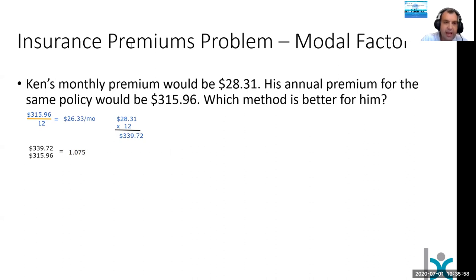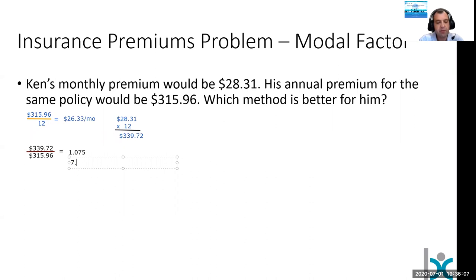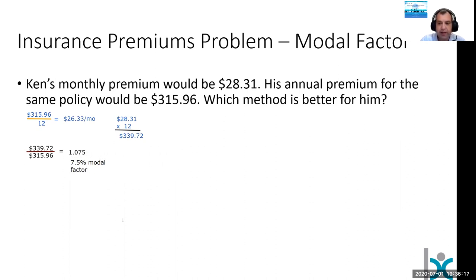Or 7.5% is the amount of increase here — we might say a 7.5% modal factor. You're switching from the annual mode of premiums to the monthly mode of premiums, and the insurer is going to charge you 7.5% for that. But is this the same as borrowing money at 7.5%?